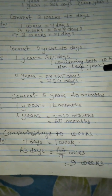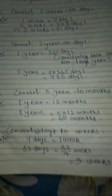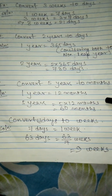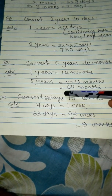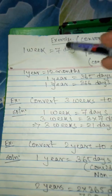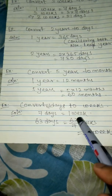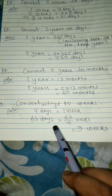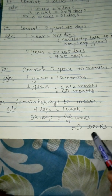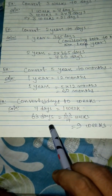Next, converting 5 years to months: since 1 year equals 12 months, 5 years equals 5 multiplied by 12, which is 60 months. Finally, converting 63 days to weeks: we reverse the formula — 7 days equals 1 week — so 63 days equals 63 divided by 7, which is 9 weeks. Thank you.